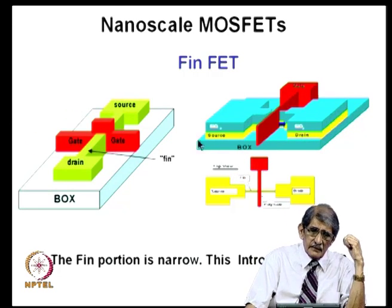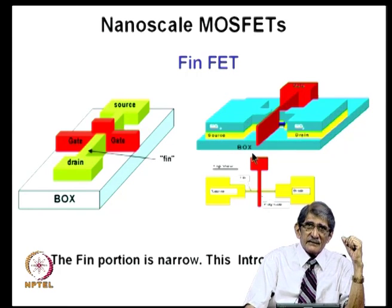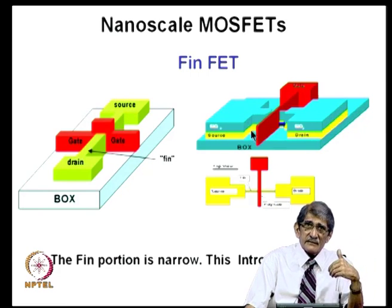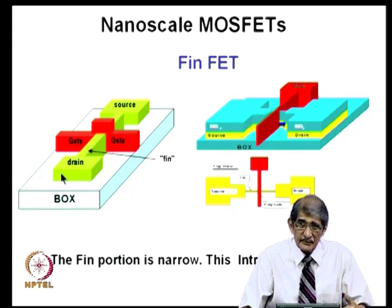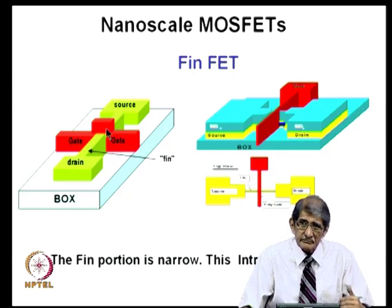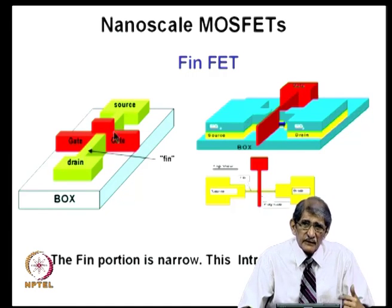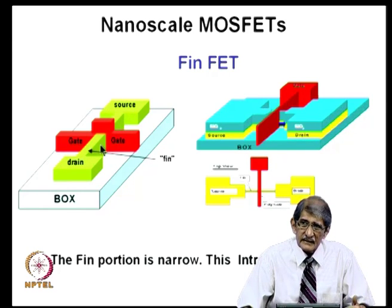For this purpose, I have put here the FinFET which we discussed last time. This is the diagram I showed before — a simplified three-dimensional picture viewed from the other side. You can see the source, drain, and the Fin which connects them. The channel is found in the Fin. If I have the gate only in this portion, this is the oxide and the polysilicon or metal gate. I am showing only one fin; multiple fins would come parallel, with the gate formed around them.